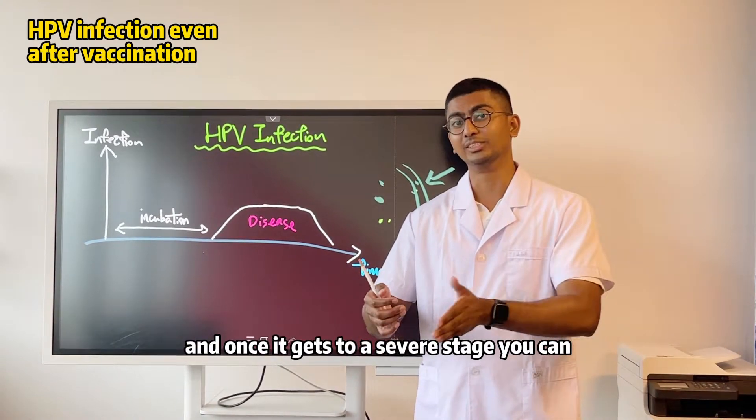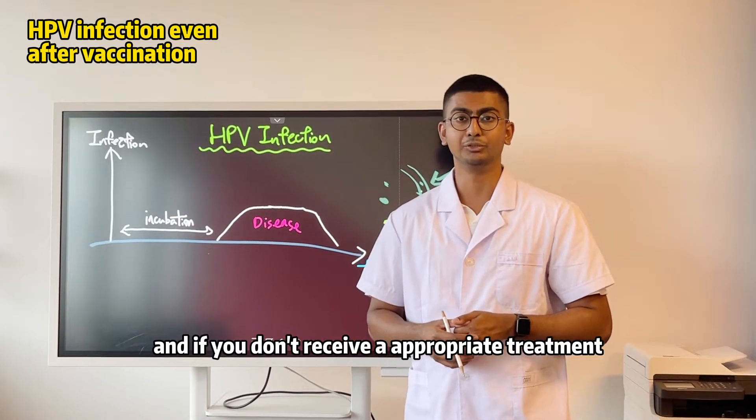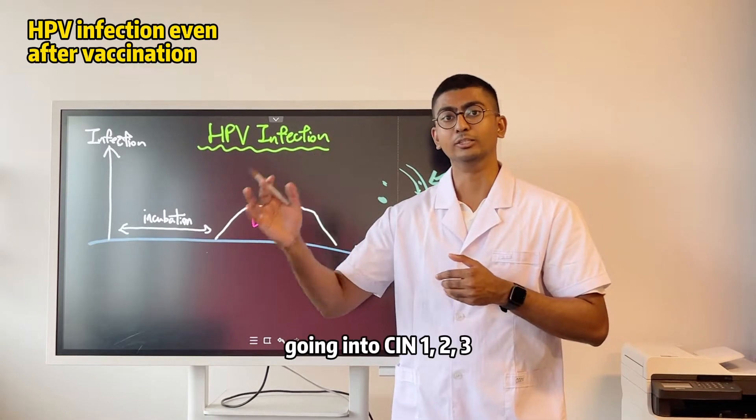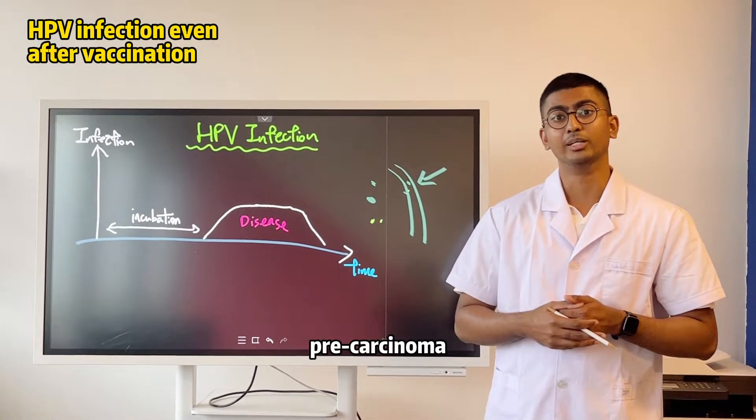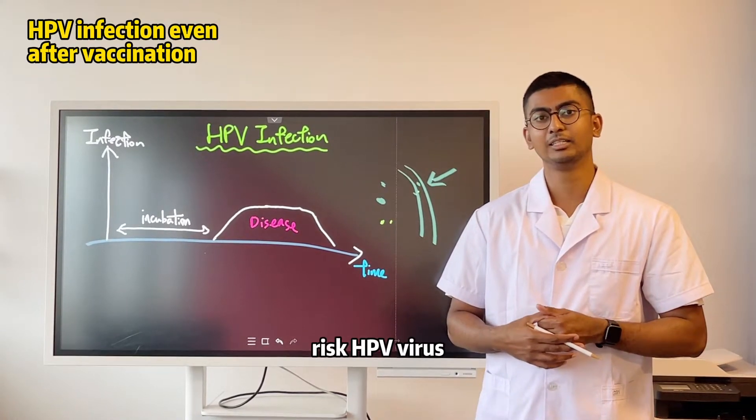And once it gets to a severe stage, it can replicate very quickly. And if you don't receive appropriate treatment, it can also potentially progress into CIN-1, 2, 3, pre-carcinoma, and also potentially carcinoma, if it is a high-risk HPV strain.